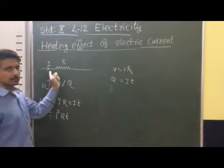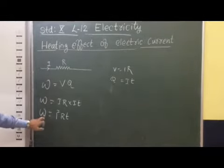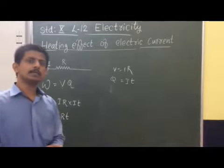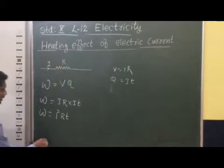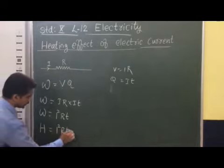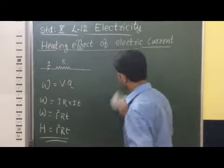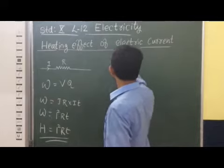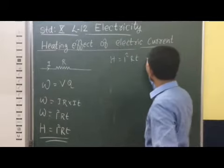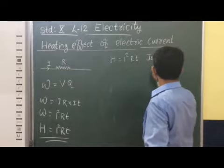That means in order to move a charge from one end to another end of this conductor, the work done is W equal to I²RT. This work done is considered as the amount of heat energy dissipated in this circuit. So H is equal to I²RT, and this relation is known as Joule's Law of Heating.